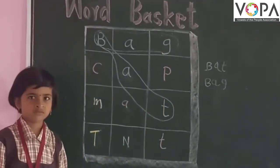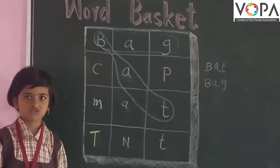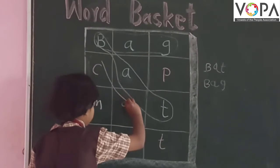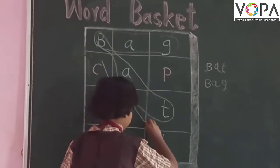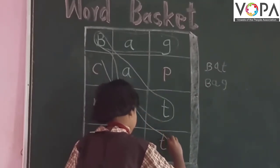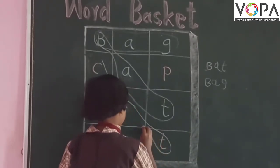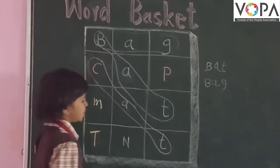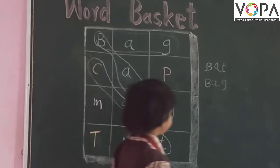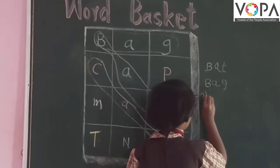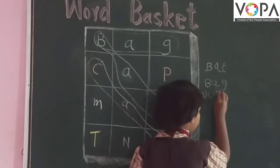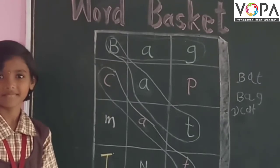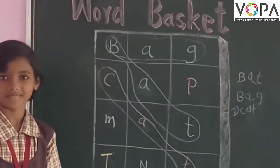Very good. You're finding meaningful words with help of this chart. Correct. T-A-T, B-A-T, bat. Very good. Please make more meaningful words from this chart.